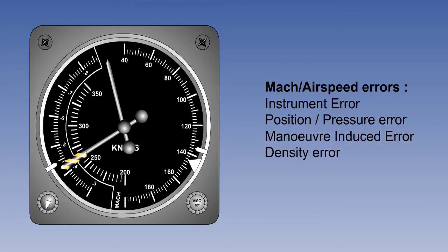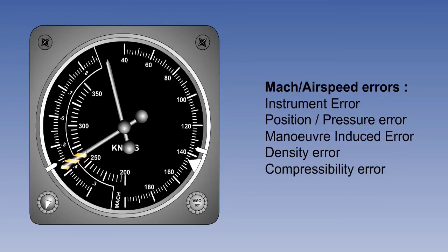Density error occurs because the airspeed indicator is actually reading dynamic pressure, which is displayed as airspeed. Therefore, the airspeed displayed will only be the true airspeed, or TAS, at the air density for which the airspeed indicator is calibrated. At air densities other than this, the airspeed indicator will not indicate the true airspeed. Lastly, we have compressibility error. At high airspeeds, particularly above 300 knots, the air is not brought to rest in a pitot pressure sensing system. Consequently, the pressure sensed will be artificially high, which will cause the airspeed indicator to over-read. Near the speed of sound, this error can be more than 20 knots.